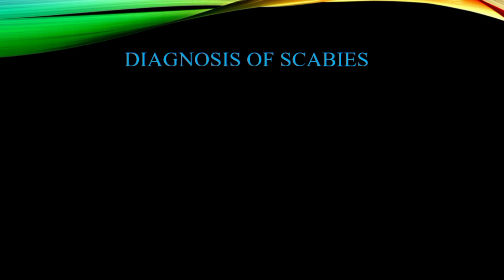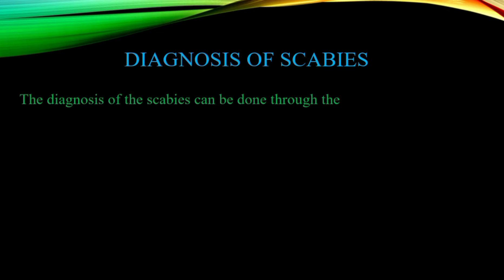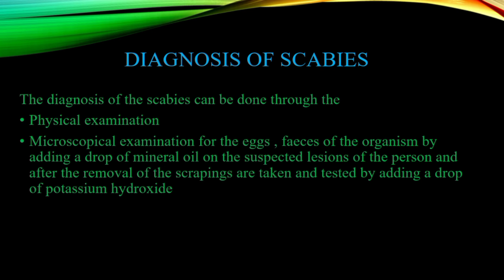The diagnosis of scabies is done mainly by physical examination — observing burrows between fingers or signs of mite infection. Microscopic examination of eggs and feces (scybala) of the organism is also done by adding a drop of mineral oil onto the suspected lesions, scraping the skin, and also adding a drop of potassium hydroxide (KOH) for confirmation.